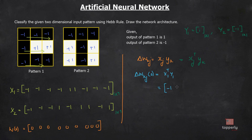Delta w_kj at iteration 0 equals x1 transpose times y1, which gives the vector: minus 1, minus 1, minus 1, minus 1, minus 1, 1, 1, 1, minus 1, minus 1, minus 1, minus 1 (transposed). This is x_j transpose times y1.